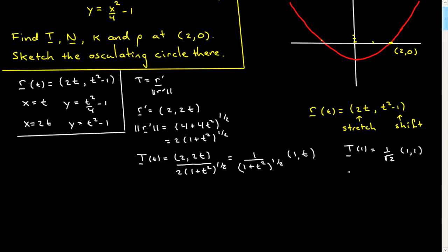So this is our tangent vector. Note that t = 1 corresponds to our point (2, 0). The tangent vector is (1/√2)(1, 1), which is at a 45-degree angle — going over 1/√2 in x and up 1/√2 in y. I'll draw the tangent vector, and it should have length 1. There it is — that's T.